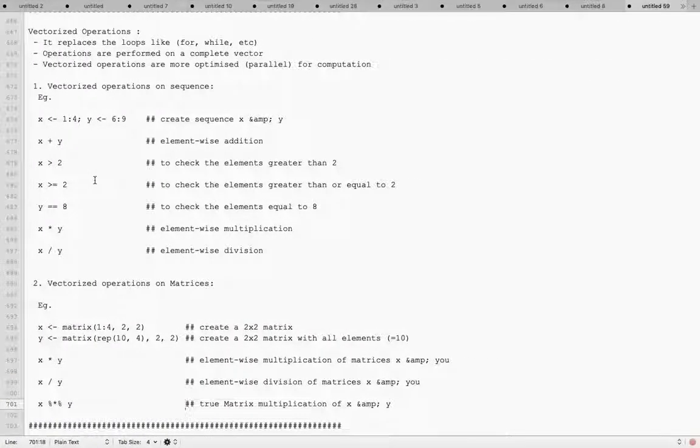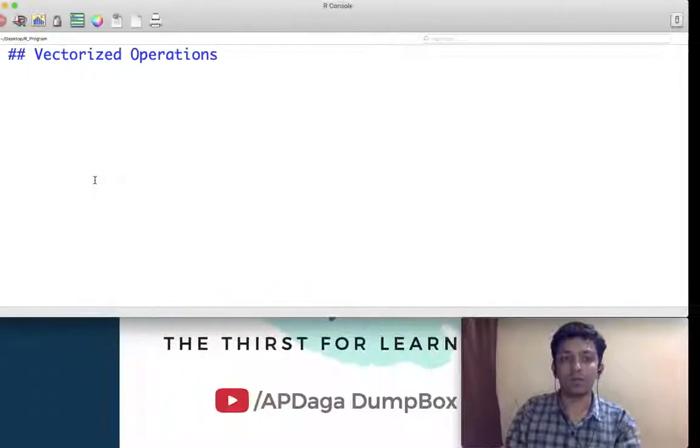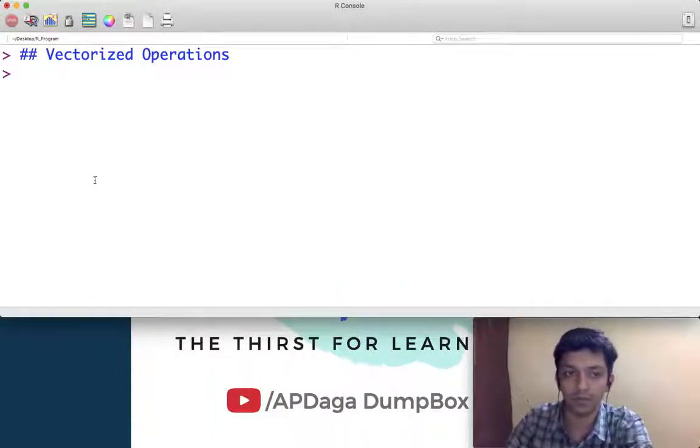So till now we have already seen different data types like list, vectors, and matrices. Now what is vectorized implementation, or vectorized operation?